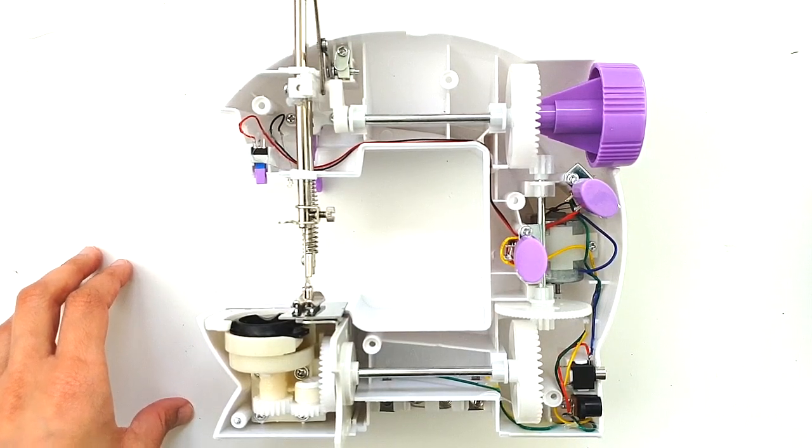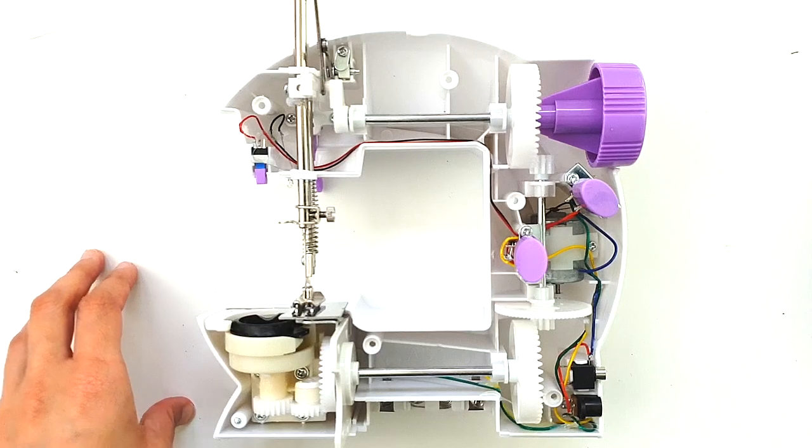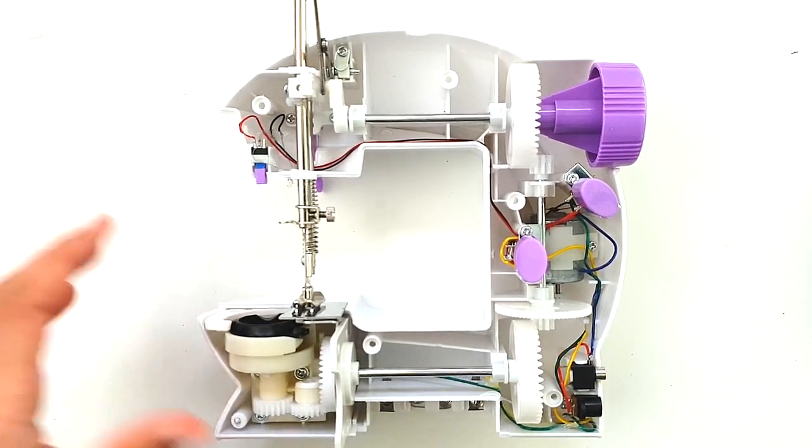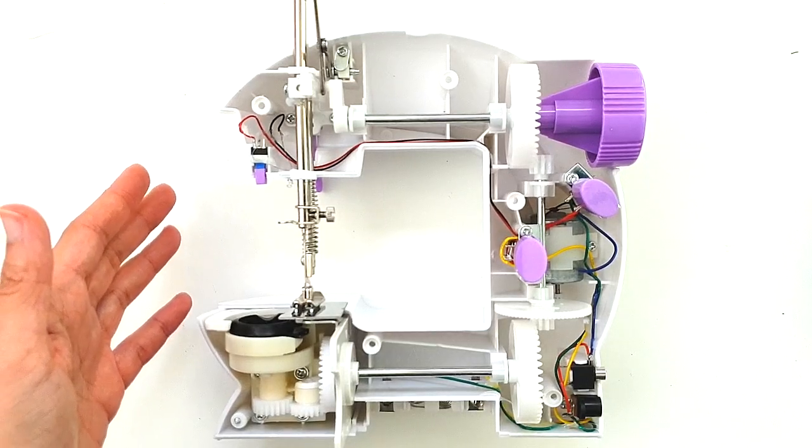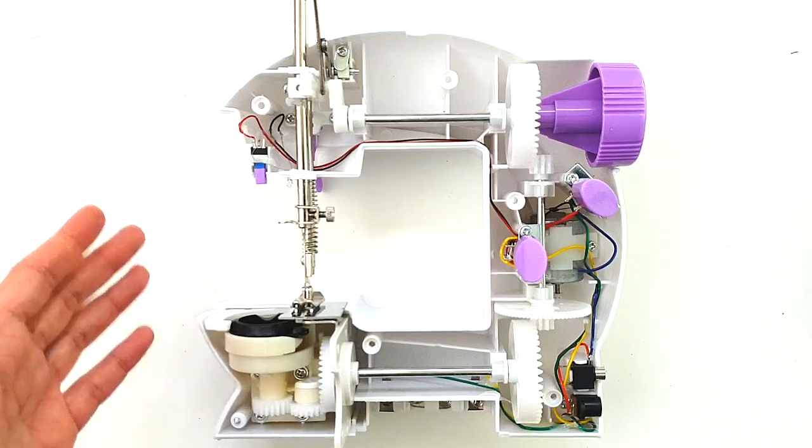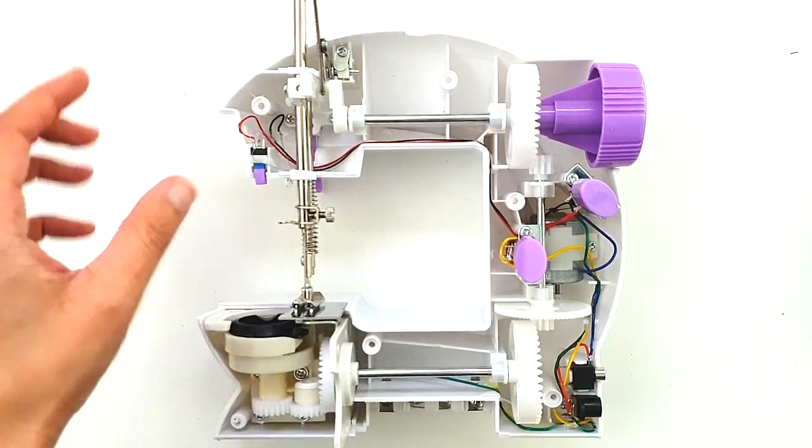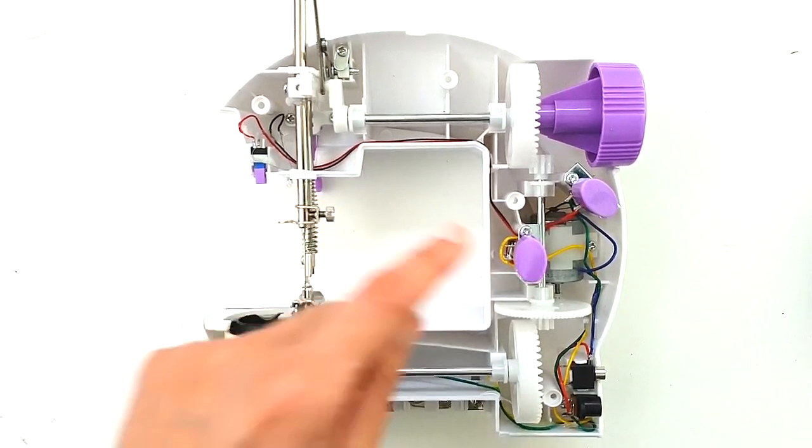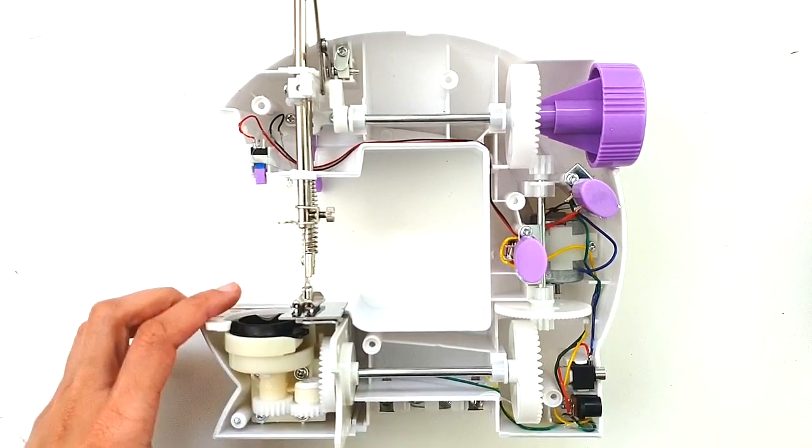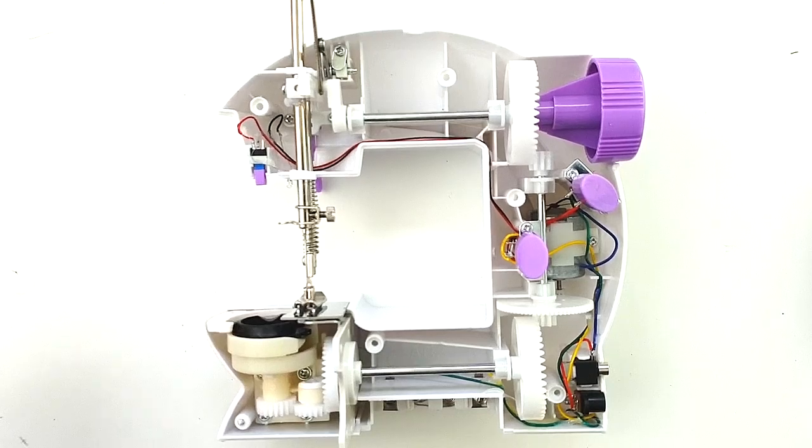So yeah, make sure that you grab a number one screwdriver or a small screwdriver and get going. Open up your mini sewing machine and figure out what's wrong. Because it's such a cheap little machine and it opens up so easily, don't worry too much if you make mistakes, because that's how you're going to learn. So fiddle around with it, get to know it better, and if any gears have slipped out of place, just pop them back together. Thanks so much for watching guys, and I'll see you guys soon. Bye!